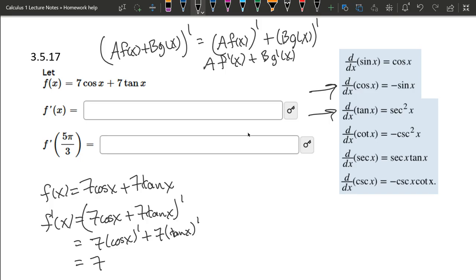So derivative of cosine is negative sine. Make sure you use parentheses because you're multiplying. Plus derivative of tangent is secant squared, so there we go.